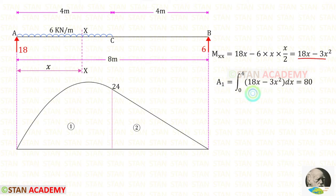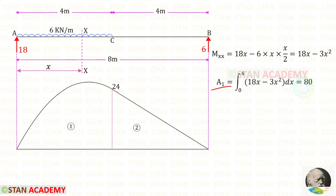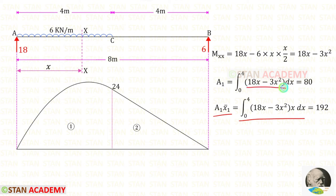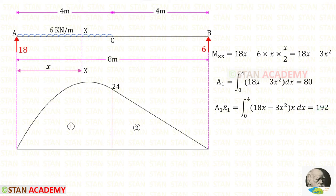We apply the moment in the integration with limits 0 to 4. Using a calculator to do the integration — if you do not know how to do integration in the calculator, see the description below — for Area 1 I have got 80. Now let us find Area 1 × x̄₁. Here also we do integration but multiplying by x. After the calculation for A1·x̄₁ we get 192. Note that Area 1 × x̄₁ is measured about point A.